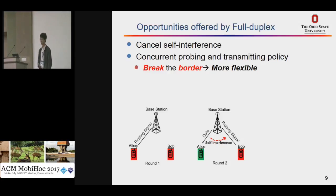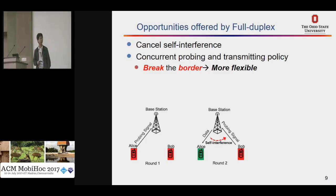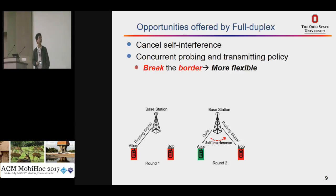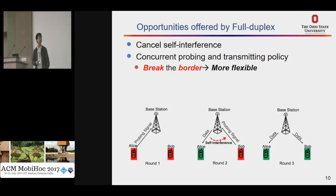For the second slot, the base station has already learned the channel to the first user, Alice. Now another user, Bob, can transmit a pilot signal to the base station, because if the base station has full-duplex capability, it can use interference cancellation to cancel the self-interference. This allows simultaneous uplink and downlink transmissions. For the final slot, the base station knows the channel to both users and can use multi-user MIMO to send all the data packets.